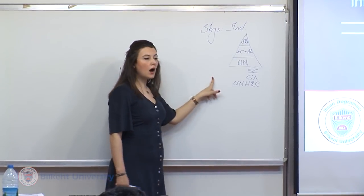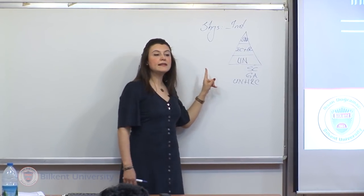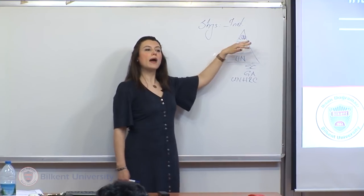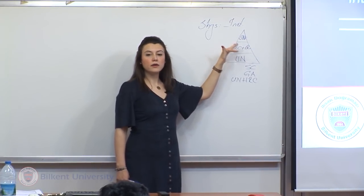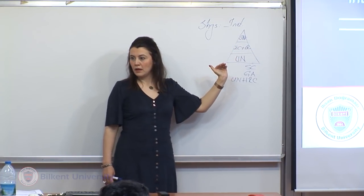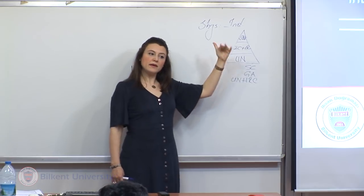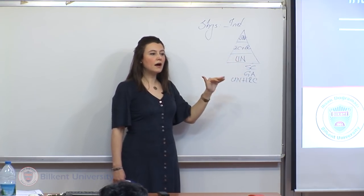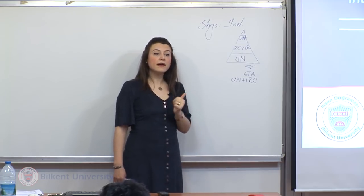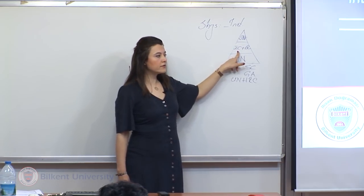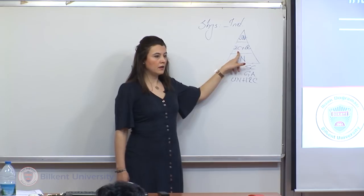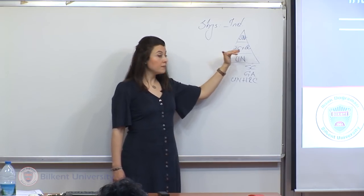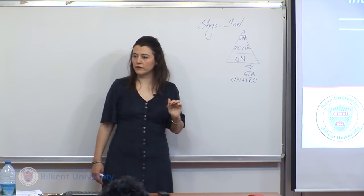This is how human rights protection is expected to work. First of all, you go to your own courts and exhaust all domestic remedies — appeals and so on. Once you exhaust all domestic remedies, then you're allowed to refer your case to the European Court of Human Rights. You have to be finished with domestic remedies first. This is how this pyramid works.